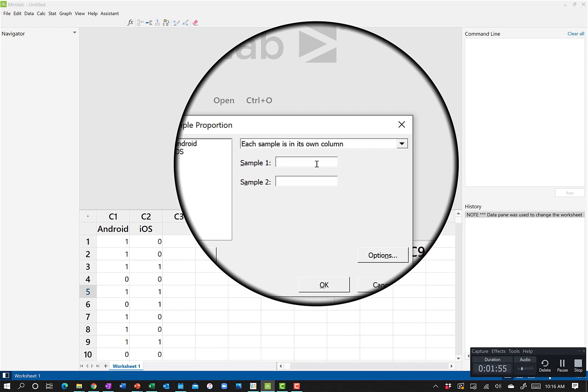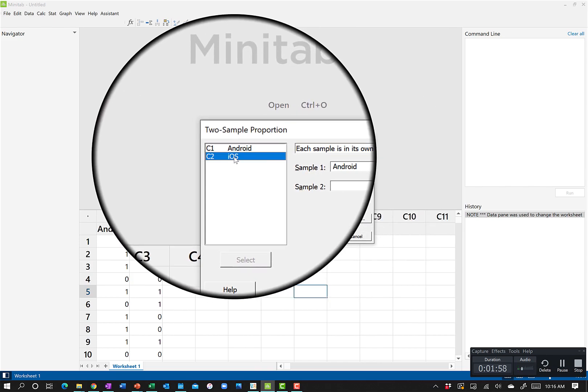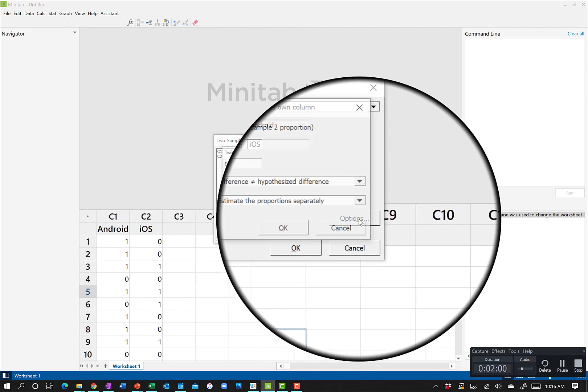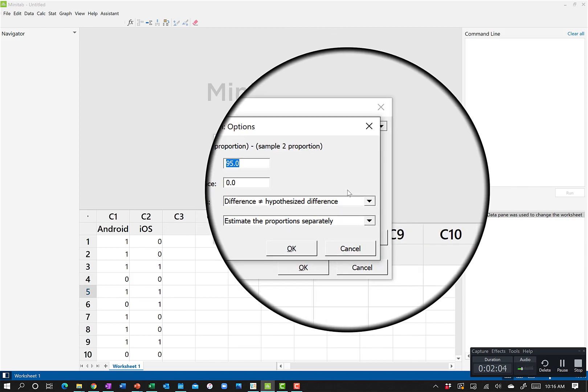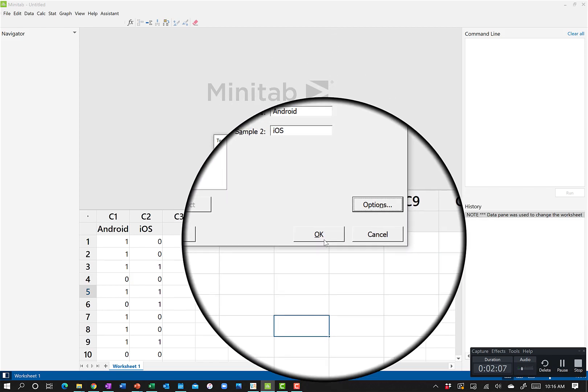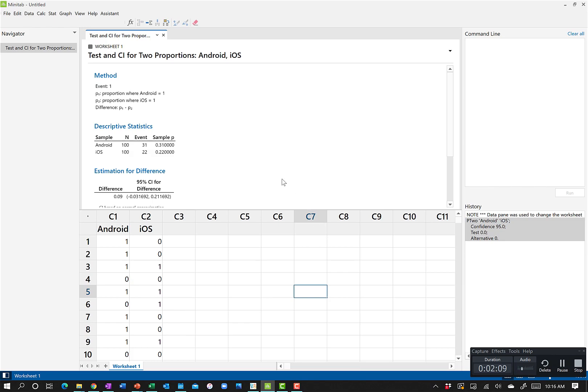In our case, we have our data where each sample is in its own column. Column one is sample one, column two is sample two. We have options if we want to do things like a one-tailed test, but we don't want to. We're doing a two-tailed test here.